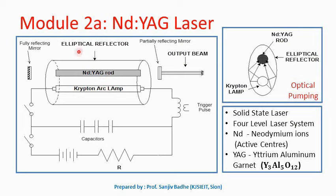We are using an elliptical reflector in order to make best use of light energy for exciting the neodymium ions. Because the Nd:YAG rod is kept at one focus and the krypton lamp at the other focus, all the light rays emitted by the krypton arc lamp, after getting reflected from the wall, will arrive at the other focus where the Nd:YAG rod is kept. So the light energy is not wasted — the entire light energy is utilized for exciting the neodymium ions to higher levels. This is the purpose of using the elliptical reflector.